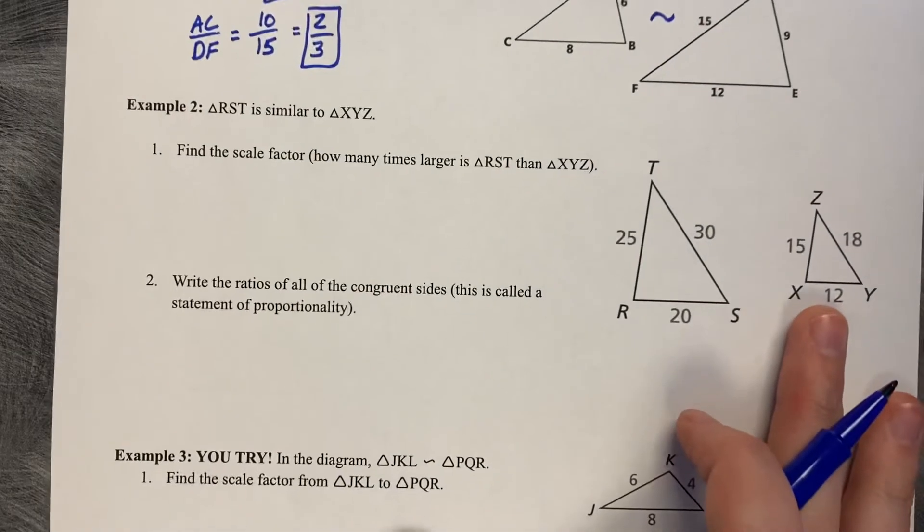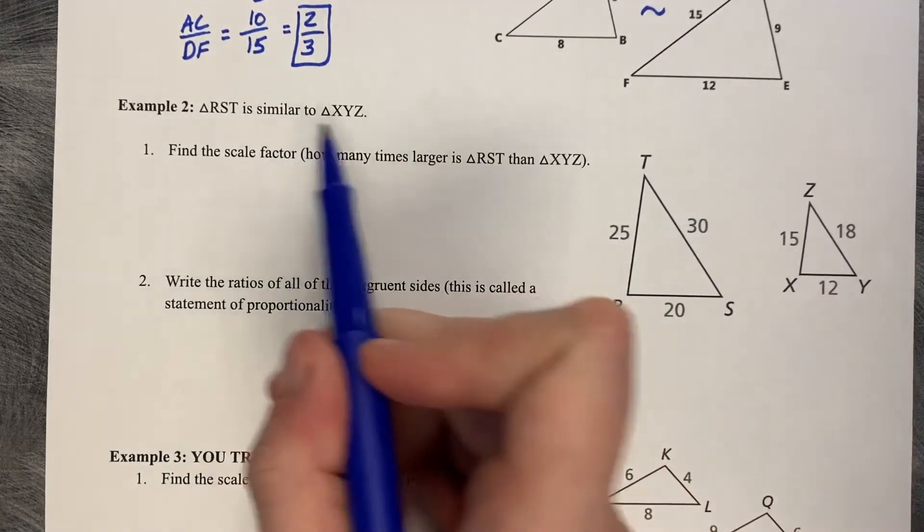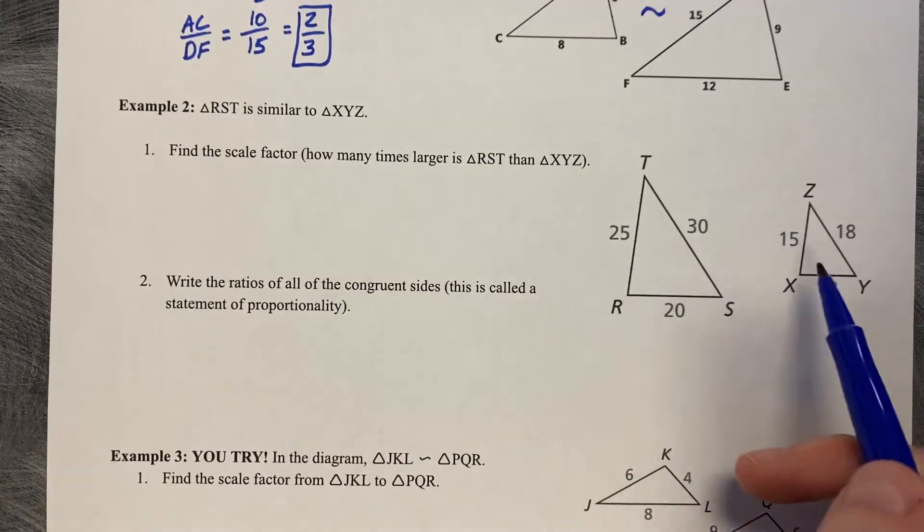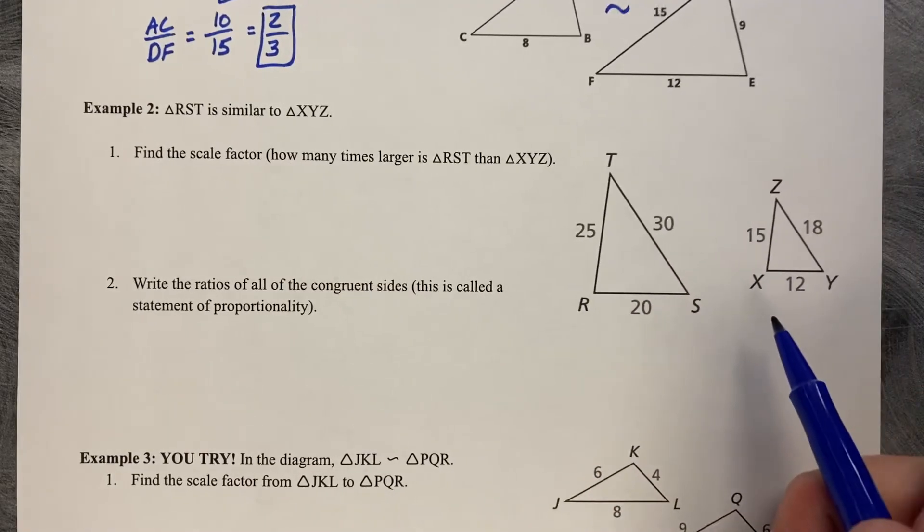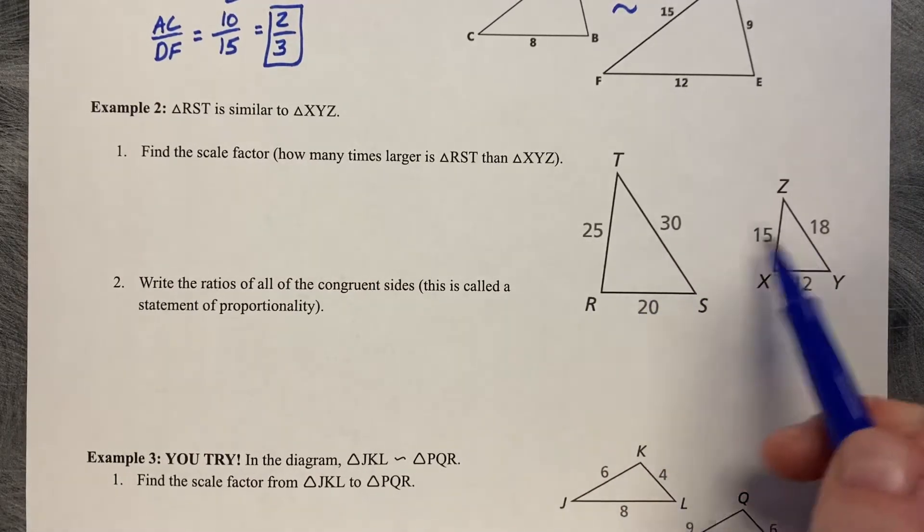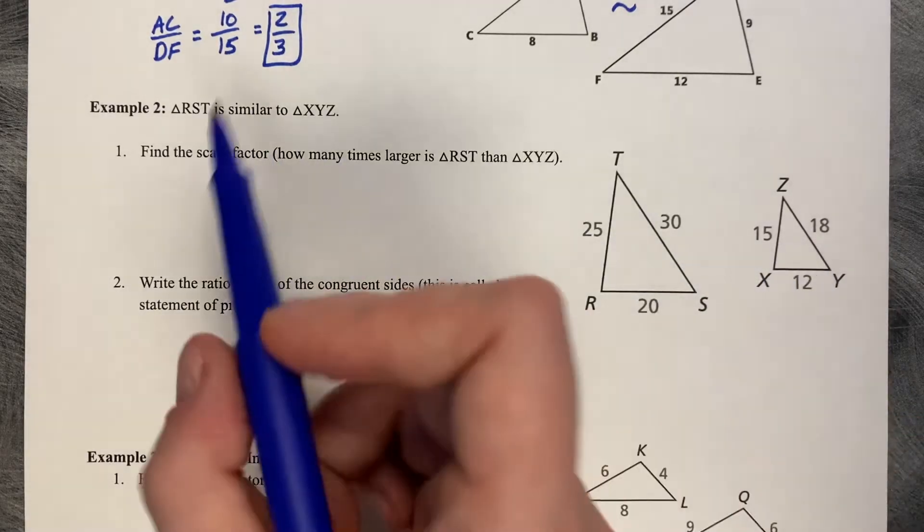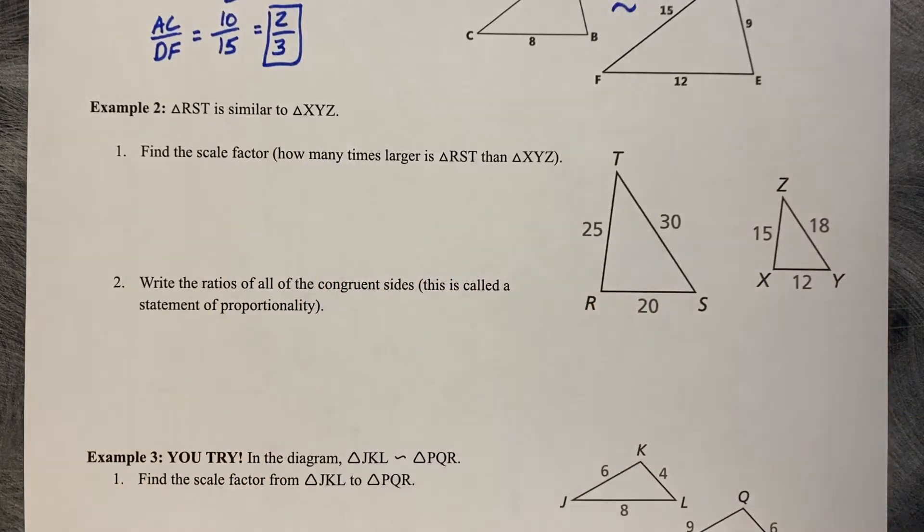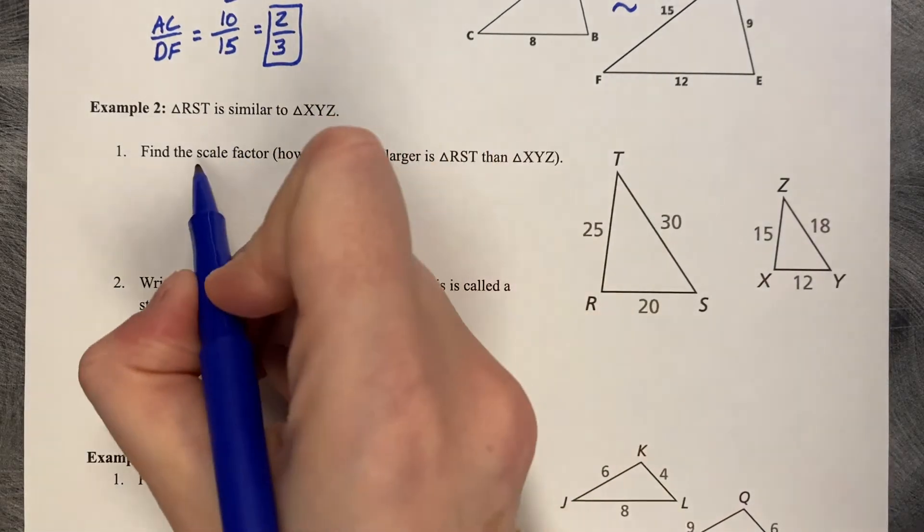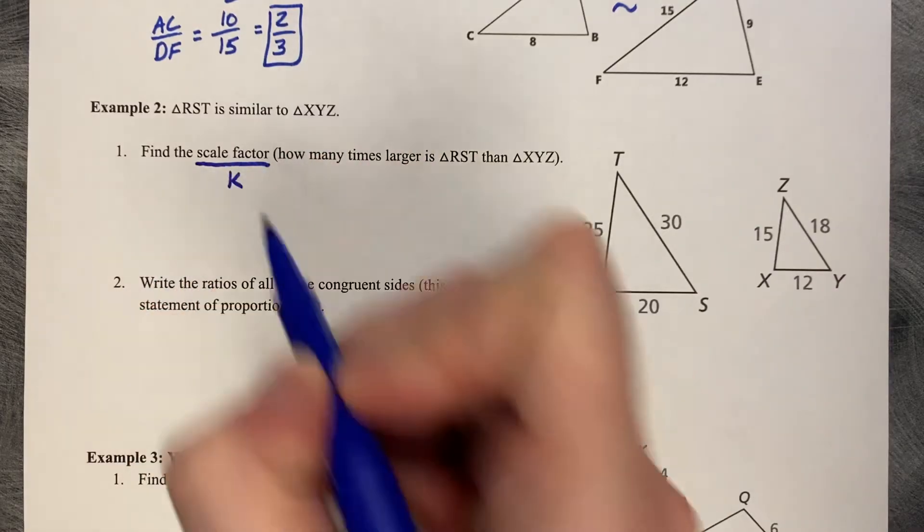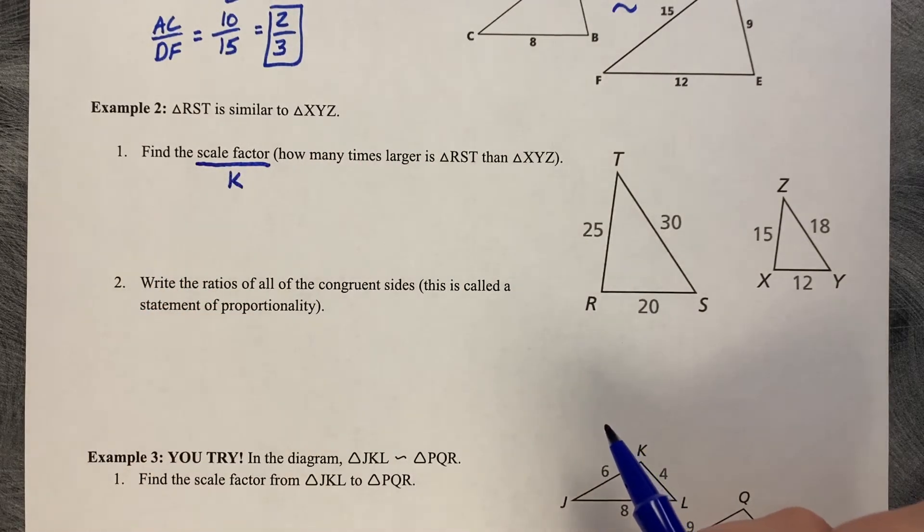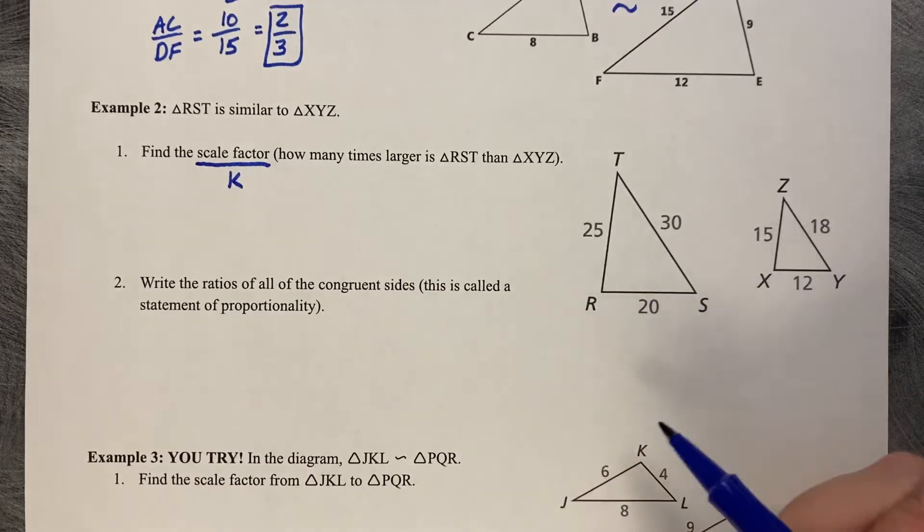Example number 2. Triangle RST is similar to XYZ. So these two shapes are not exactly the same size, they are similar in size. One of them has been either increased or decreased. It says find the scale factor. How many times larger is RST than XYZ? Scale factor is written with a K. K represents scale factor.